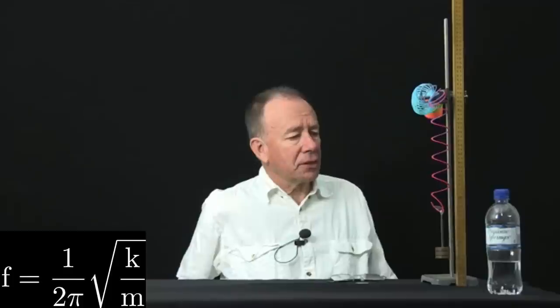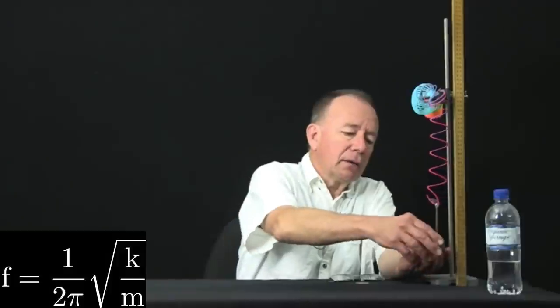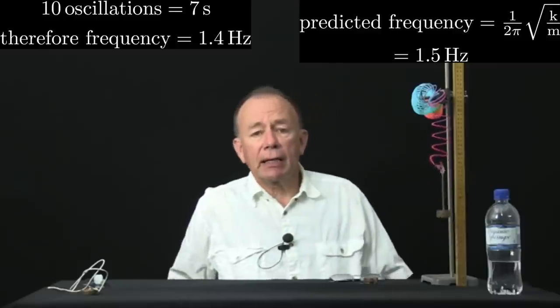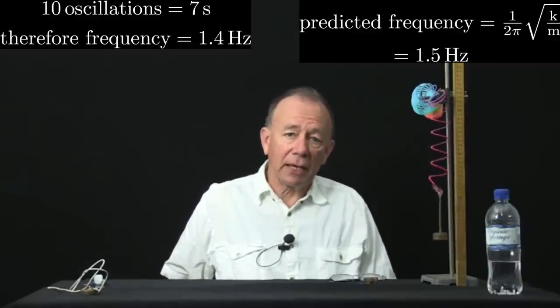Alright, we've measured the stiffness of this spring. Let's now predict what its frequency would be with a mass of 100 grams there. So, I'll displace it, and we can count 0, 1, 2, 3, 4, 5, 6, 7, 8, 9, 10 oscillations, and that allows us to get an estimate of the frequency. Let's do that calculation.